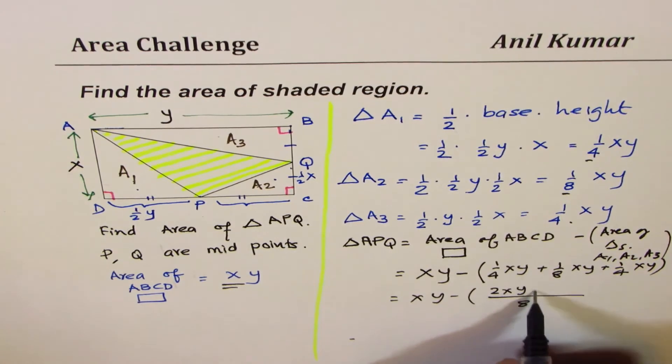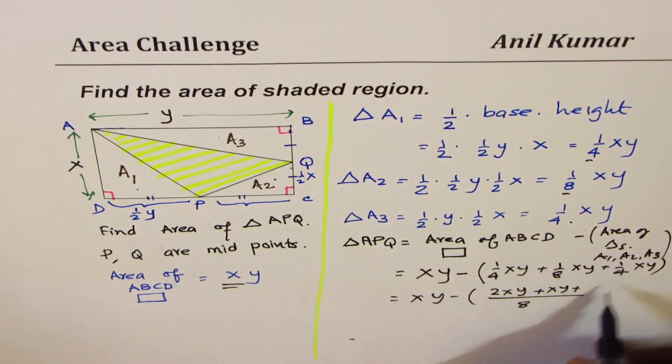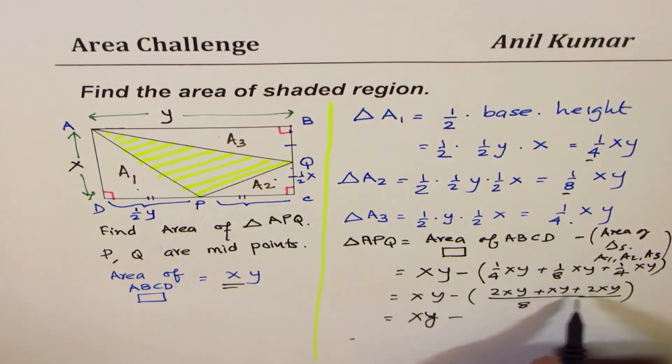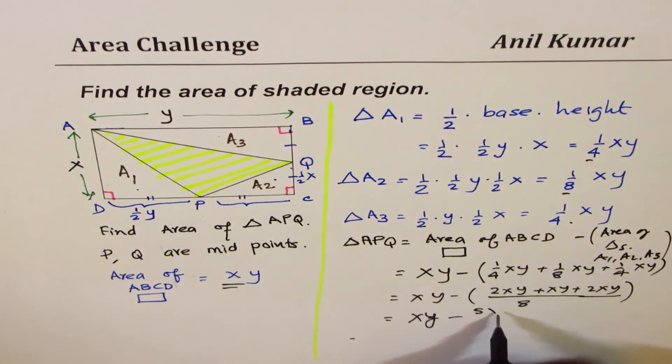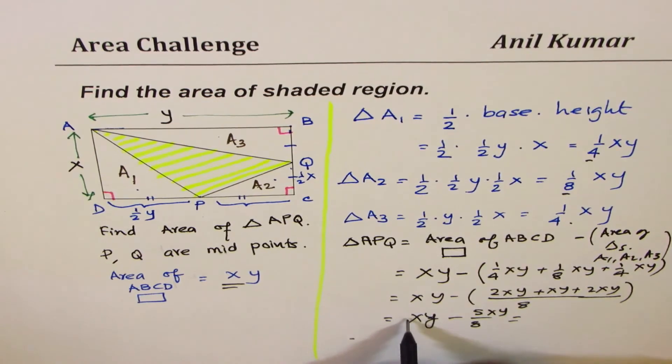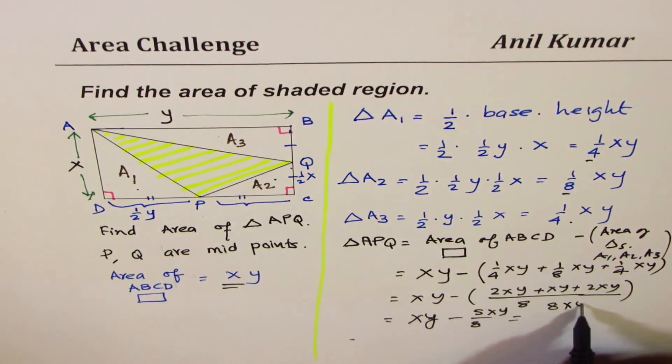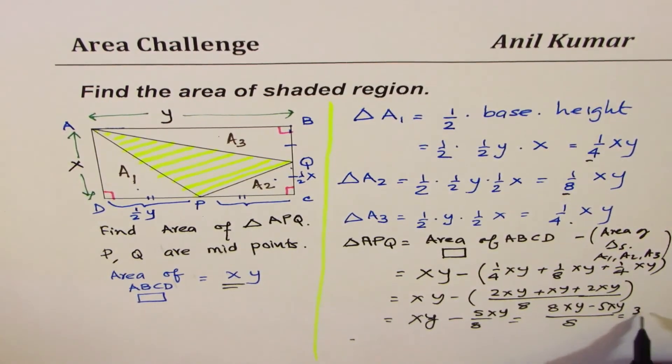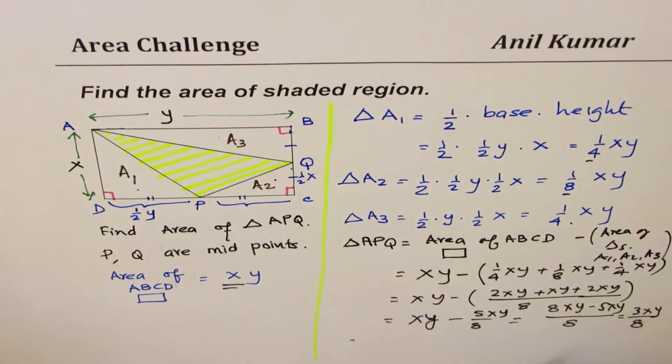So that gives you XY minus (2, 3, 4, 5) 5XY over 8. So it is 8XY minus 5XY over 8, and that gives you 3XY over 8.